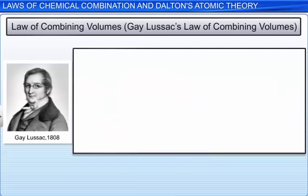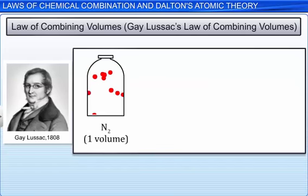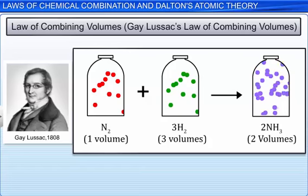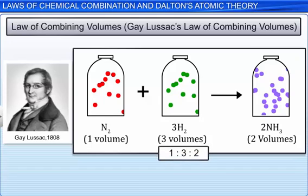Another example is when one litre of nitrogen gas reacts with three litres of hydrogen gas to produce two litres of ammonia gas. Since all the reactants and products are gases, the mole ratio of nitrogen gas to hydrogen gas to ammonia gas is the same as the ratio of the volume of each gas participating in the reaction — that is, 1 is to 3 is to 2.